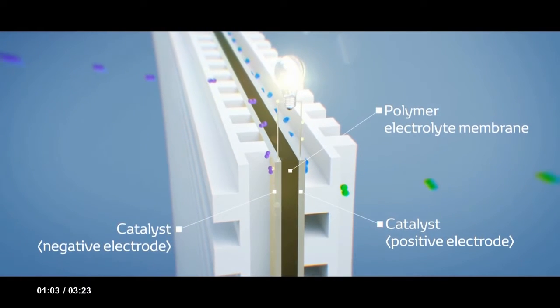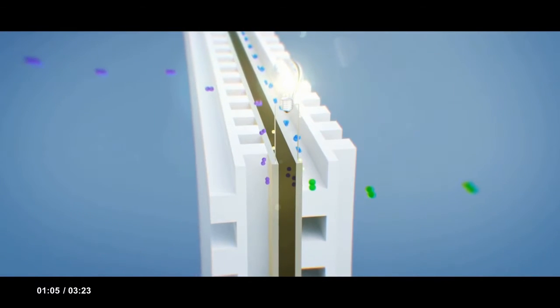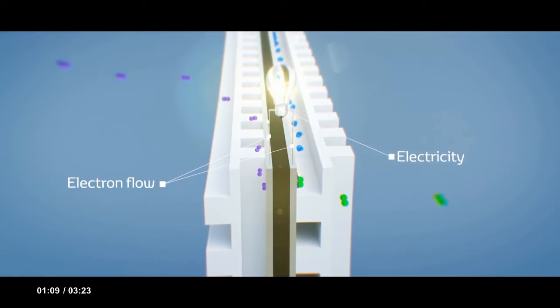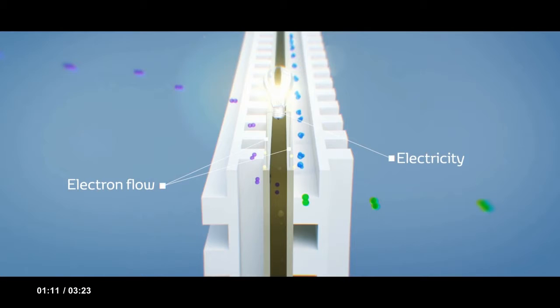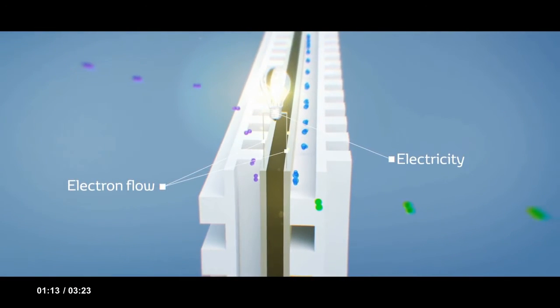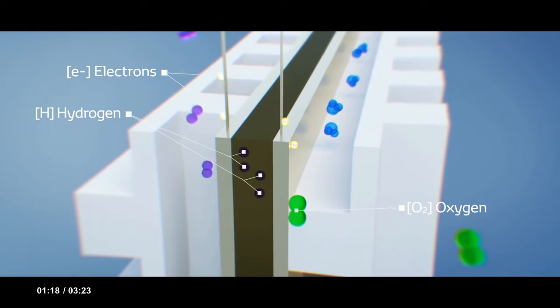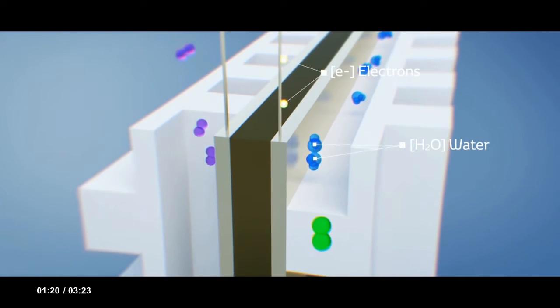Hydrogen is supplied to the negative anode and activates, releasing the electron. Then the electron flows to the positive cathode to generate the electricity. After releasing the electron, the hydrogen becomes a hydrogen ion, moving to the positive cathode and bonding with the oxygen in the air, forming water.